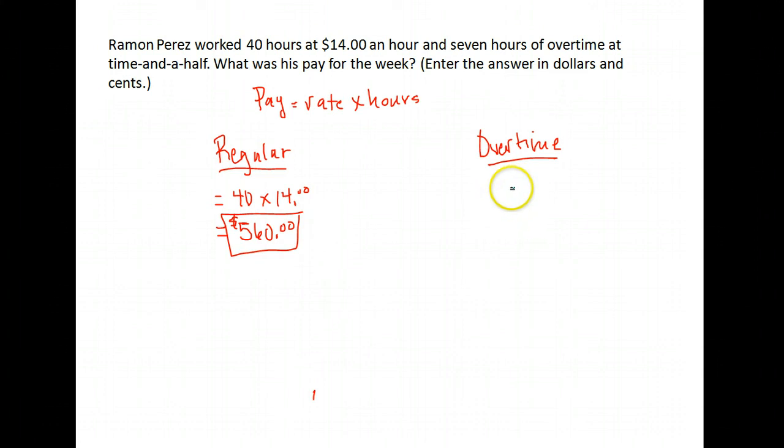Okay, next let's find our overtime pay. Now his overtime pay, we know how much time, it was seven hours of overtime, but we need a rate here, and we don't know the rate right now.